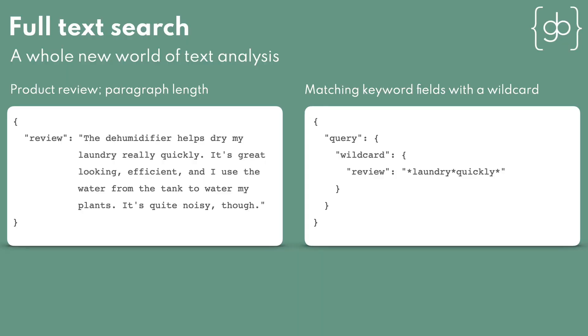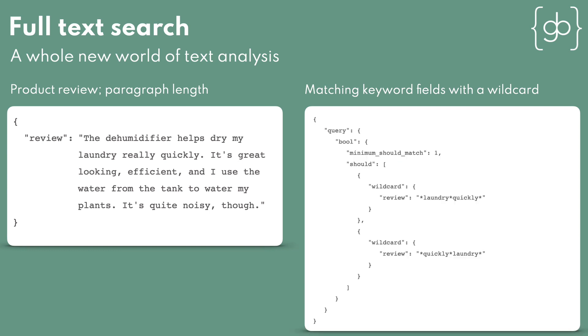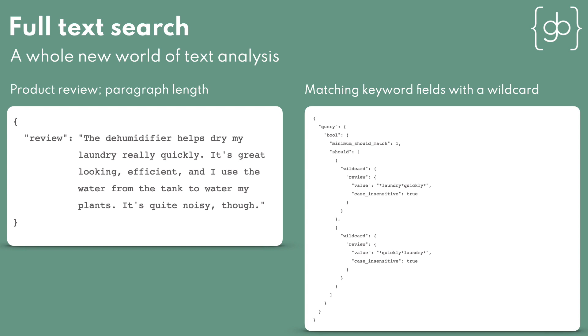We could use a wildcard query matching for 'laundry' then 'quickly', but we'd also need to look for 'quickly' then 'laundry' in case someone had written 'quickly dries my laundry'. We'd also need to make sure the query was case-insensitive, which would make a slow query even slower. Another option would be a regular expression, which again would perform very badly and be painful to write. And how could we deal with when somebody wrote 'it dries my laundry really quickly', 'it dries my laundry real quick', or 'my laundry has never gotten dry so quick'?